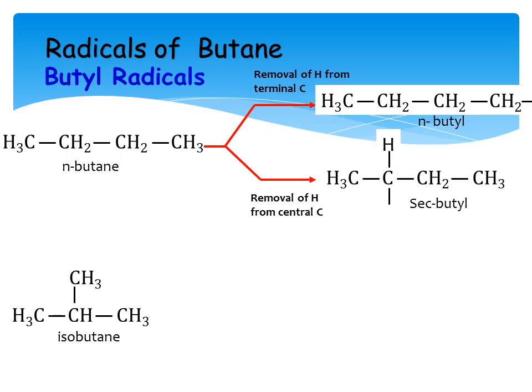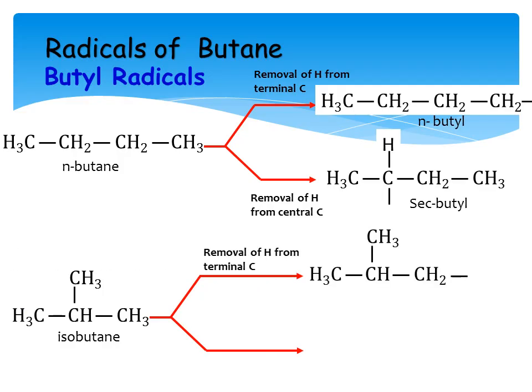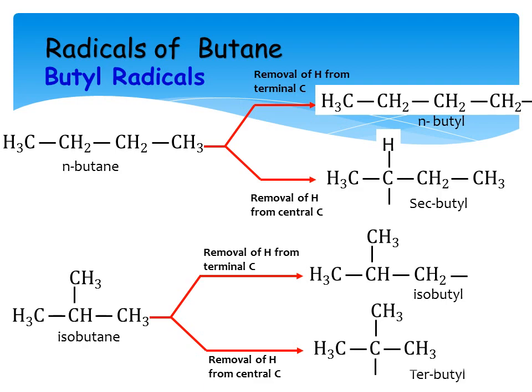In case of isobutane, we again have two possibilities — terminal carbons and the central carbon — giving two radicals. When hydrogen is removed from the terminal carbon, it is called isobutyl. When it is removed from the central carbon, it is called tertiary butyl. 'Tertiary' means that central carbon is further attached to three other carbons. I hope this is very helpful for you. Inshallah, we will come across a new topic next time. Allah Hafiz.